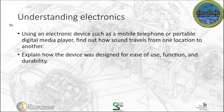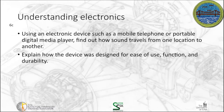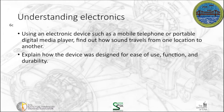For 6C, understanding electronics: you're going to use an electronic device such as a mobile telephone or a portable digital media player and find out how sound travels from one location to another. You're then going to explain how the device was designed for ease of use, function, and durability. This is going to require you to do a little bit of digging depending upon the technology you look at and figure out how sound is transmitted. We talked about me being a human factors engineer before — looking at the ease of use, function, and durability is an important aspect of human factors. You'll have plenty of time to dig into that.